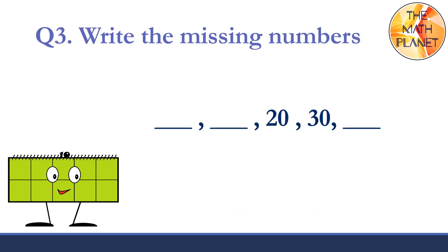Question three. Write the missing numbers. Let's start from the part that is known. Twenty, thirty. So, the next number will be 40. Now, let's go back and count back. Forty, thirty, twenty, ten, and zero. So, the sequence will be zero, ten, twenty, thirty, and forty.